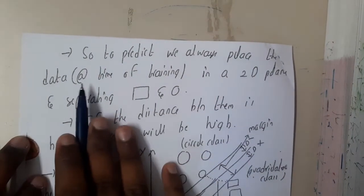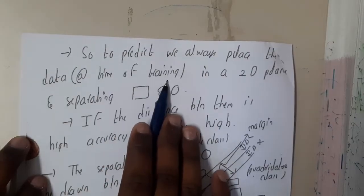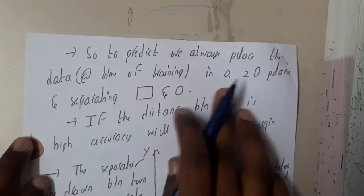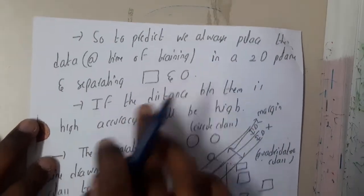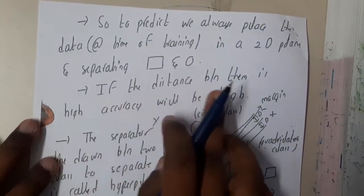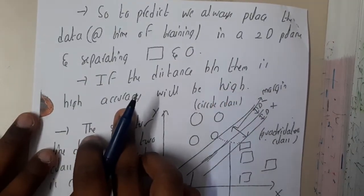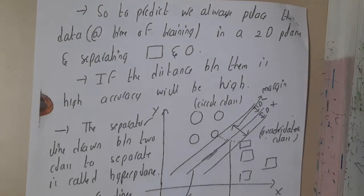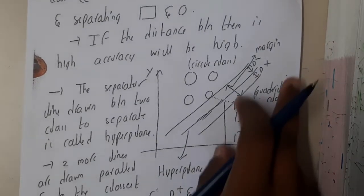To predict, we always place the data at the time of training. We will be placing that data in the graph, in a 2D plane, and separates the circles and squares. So if the distance between them is higher, it means it is accurate with high accuracy. Basically, high distance is nothing but high accuracy.